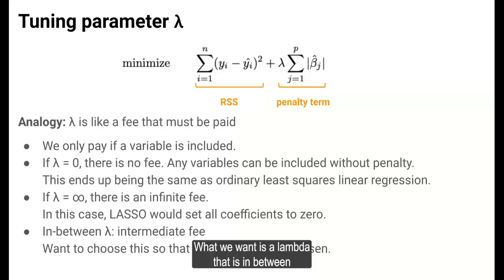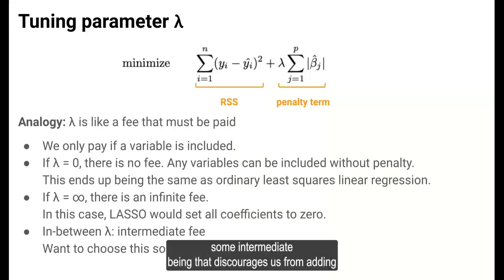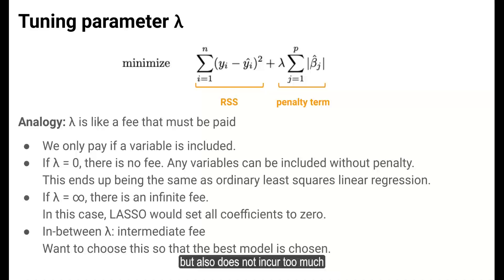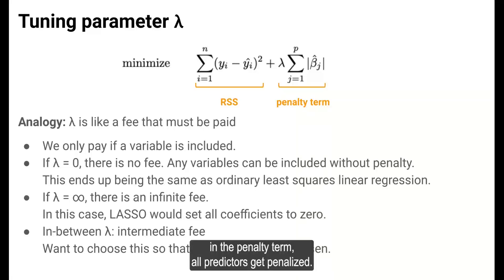What we want is the lambda that is in between—some intermediate fee that discourages us from adding a very weak predictor, one with a small coefficient magnitude, but also does not incur too much of a penalty for our strong predictors. Remember that because of that sum in the penalty term, all predictors get penalized. We want to choose lambda carefully so that the best model is chosen.